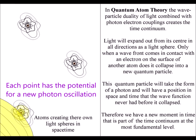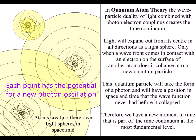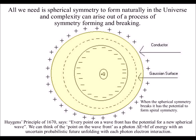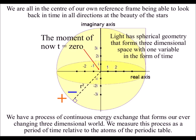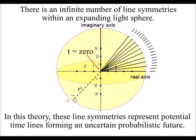Each point on the surface of the sphere has the potential to form a new spherical wavefront, with our three-dimensional world continuously changing with the movement of charge. The inner concave surface creates negative charge, and the outer surface creates positive charge. We have an infinite number of line symmetries within a sphere, as long as the sphere is expanding.